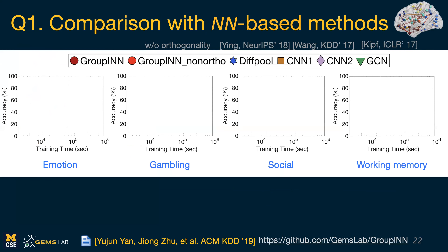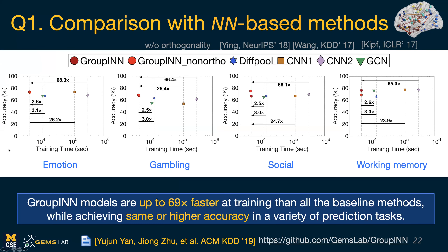Let me show you some results. I compare with neural network-based methods like DiffPool, CNN with one or two layers, and GCN. I'm showing results for graph classification tasks using fMRI-based graphs from different tasks like emotion, gambling, social, or working memory. In all these cases, we want to predict the cognitive or intellectual ability of the subjects. I'm showing training time versus accuracy of the model. The takeaway is that Grouping is up to 69 times faster than these baselines and can achieve same or higher accuracy in different prediction tasks.